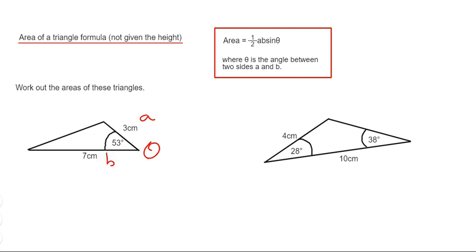It doesn't matter which way around you put A and B, it makes no difference to your final answer. If we put these numbers into our formula, it will be a half times 3 times 7 times sin 53.